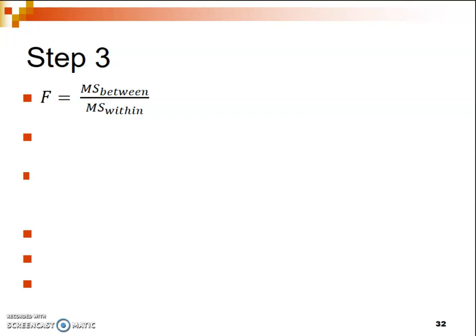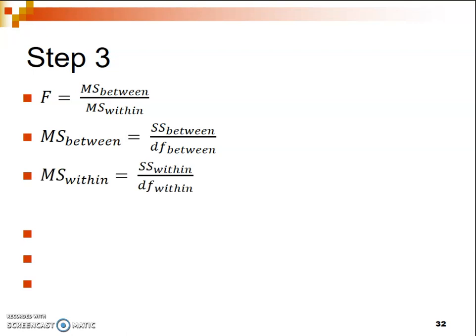In order to calculate F, we first calculate those two variance values. MS between is calculated by taking the sum of squares between divided by the degrees of freedom between — similar to how we calculated variance in chapter 4, dividing sum of squares by degrees of freedom. The difference is that we've separated the variance into the sum of squares between groups versus MS within, which uses the sum of squares within divided by the degrees of freedom within.